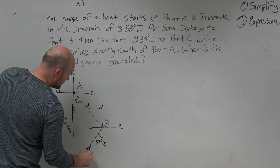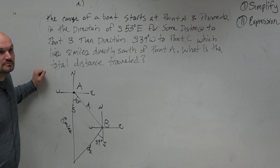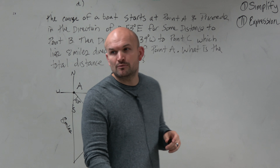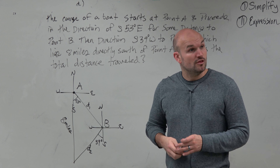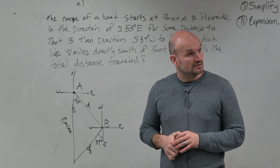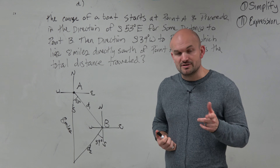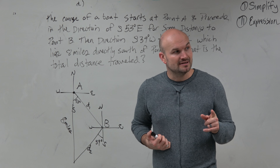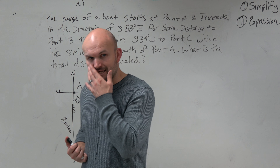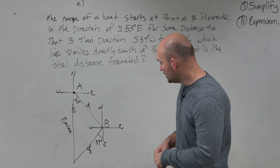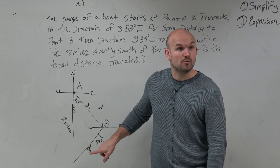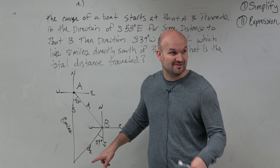And this angle is your 53 degrees. Make sure you're labeling this — this is in standard form from a bearing. Then it says the direction from there is south 39 degrees west. I have another bearing, so I'm going to create my northeast, southwest cardinal directions. So I'm going to do south 39 degrees west to point C, which lies eight miles directly south of point A. So this is eight miles, and this angle is 39 degrees.